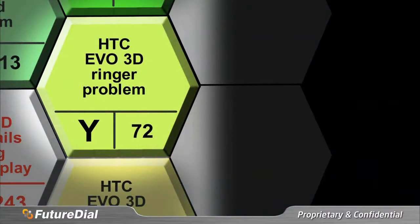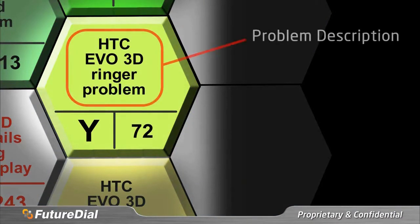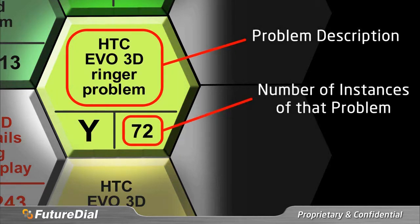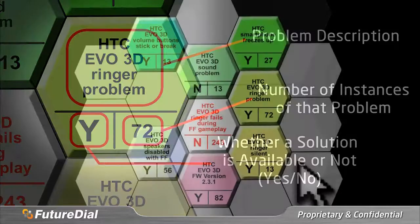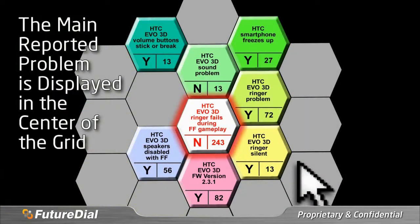The right side of the screen provides a description of the problem and the details of a solution for the problem, if available. This portion of the screen also allows for the technician to make edits and to submit solutions to the knowledge base. Each hexagonal panel contains some summary information for the technician's reference: a brief description of the problem being reported, the number of instances that this problem has occurred, and an indication of whether or not a solution is currently available for the issue. With this display, a technician can understand at a glance some general information about a given problem. The original main problem is always displayed in the center of the grid.